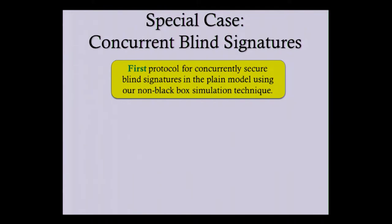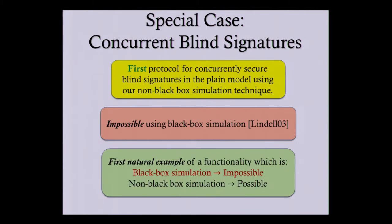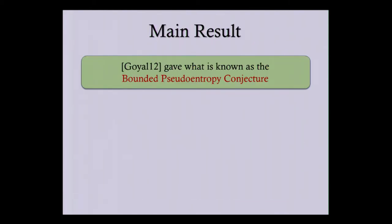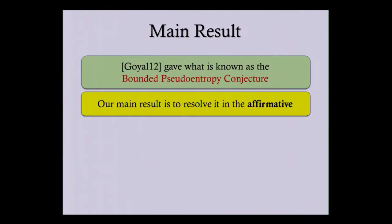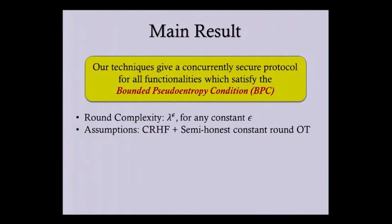For concurrent blind signatures, we give the first protocol which realizes this in the plain model — contrasting with the impossibility for black-box simulation. This together with the previous result gives the first natural example of a functionality realizable using non-black-box simulation and impossible with black-box simulation. More generally, Goyal proposed the bounded pseudo-entropy conjecture and we resolve this conjecture in the affirmative, giving a protocol for all functionalities satisfying the bounded pseudo-entropy condition. The round complexity is polynomial in the security parameter, assuming collision-resistant hash functions and constant-round semi-honest OT.